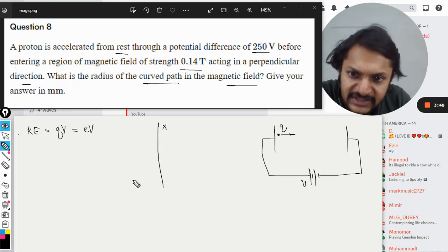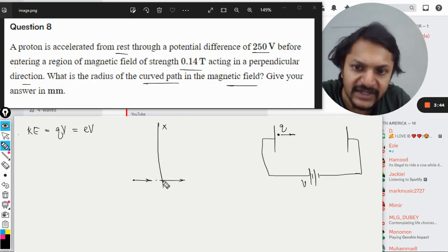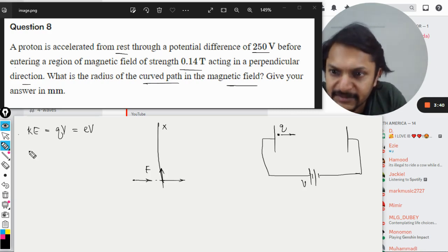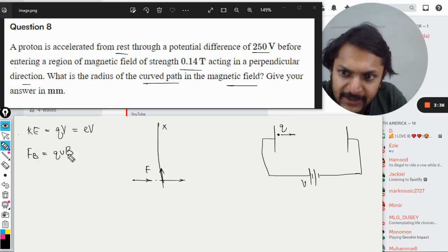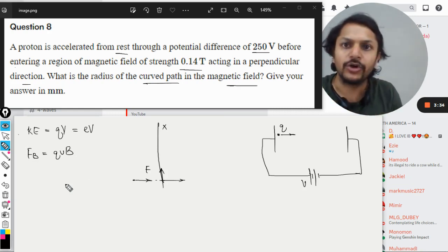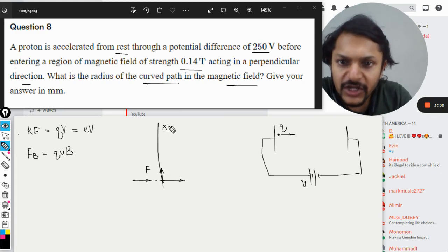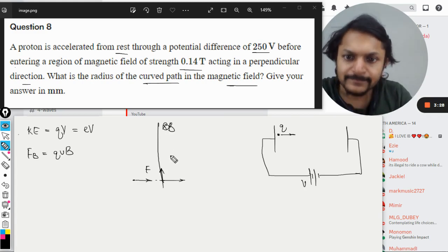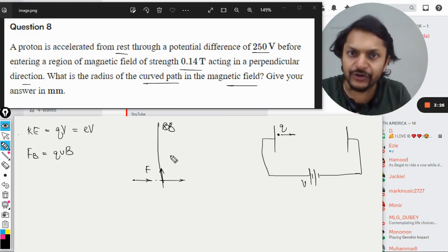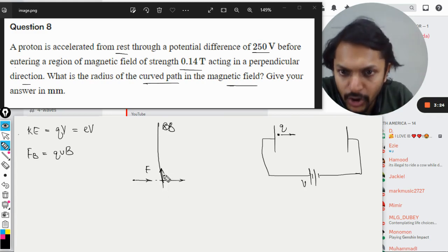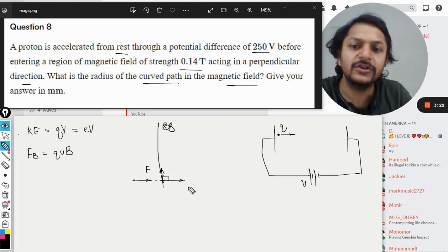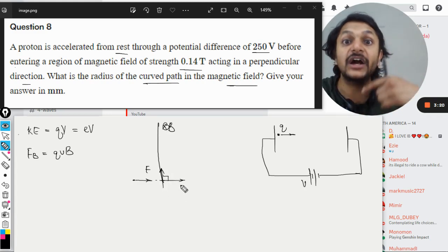Let's say the charged particle is entering here. The charged particle is acted upon by a force, and this magnetic force is given by QVB. This is given in the book: Q is the charge, V is the velocity, B is the magnetic field through which it is entering.